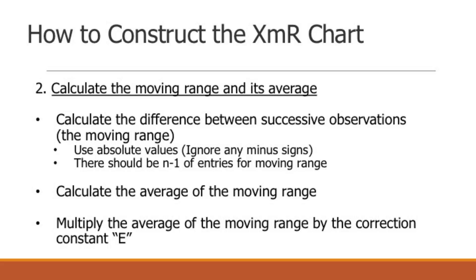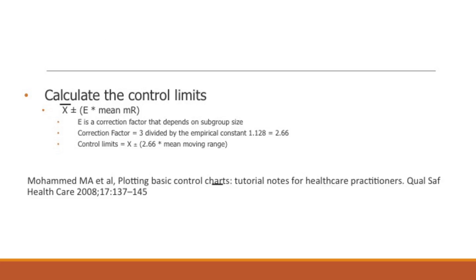The next step in creating your XMR chart is to calculate the moving range and its average. You calculate the difference between successive observations — that's the moving range. You use absolute values, so you ignore any negative numbers or minus signs. There should be N minus 1 entries for the moving range. Then you calculate the average of the moving range, and finally you multiply the average of the moving range by a correction constant known as E.